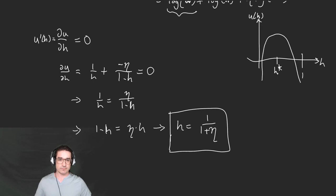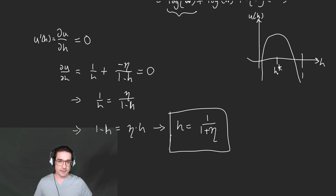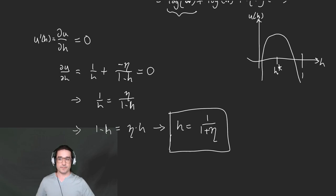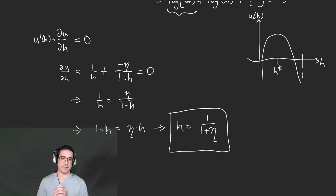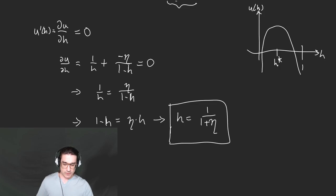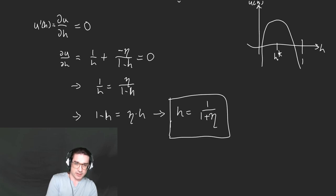In reality, if your wage goes up, you might work more because working has higher returns — that's one logic. The other logic is that you can make the same money working less, so you work less. Either can be true depending on your utility function preferences. In our log utility setup, those two forces cancel out so you work the same amount. It's a simplification, but let's run with it.